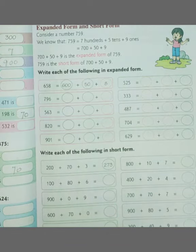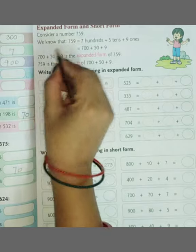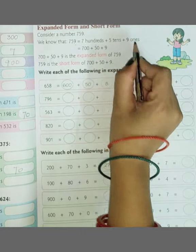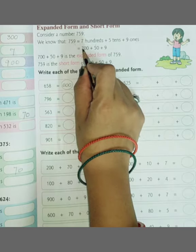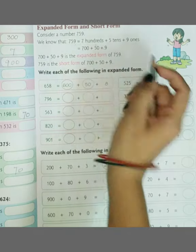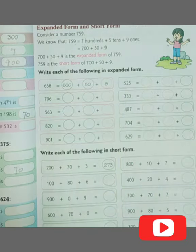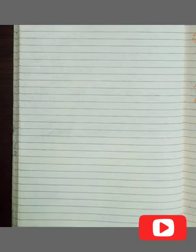Expanded form and short form. Consider the number 759. We know that 759 is equal to 7 hundreds, 5 tens, and 9 ones. This will be split as 700 plus 50 plus 9. Okay, if we need to write it, suppose I am writing here...